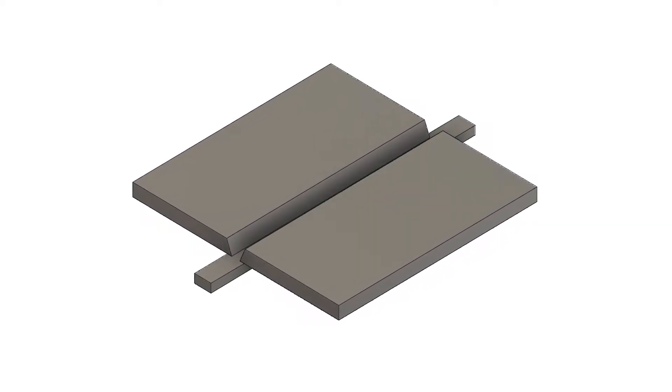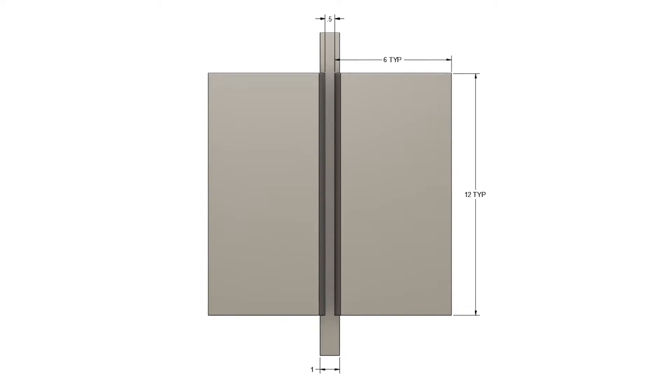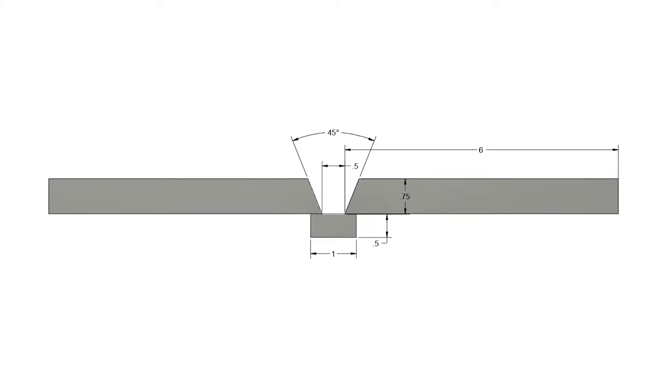For the electrode being tested, the base metal is three quarters of an inch thick, and the required joint design is a single V-groove with backing. The root opening is one half of an inch, and the included angle is 45 degrees.